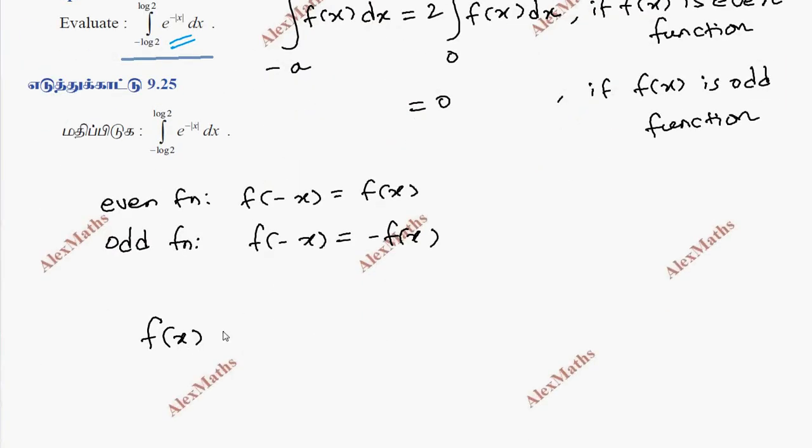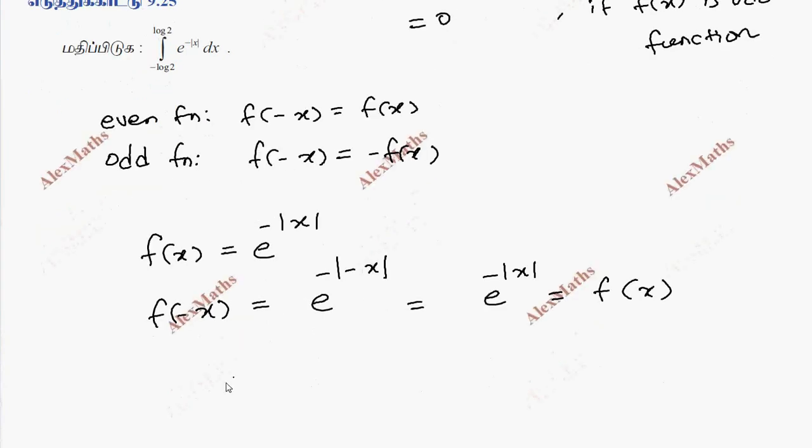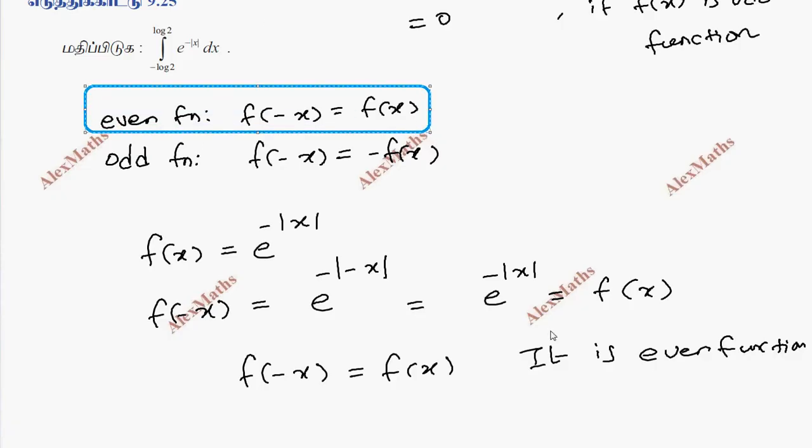f of minus x is equal to e power minus mod of minus x. But inside the mod we can ignore the minus sign, so f(minus x) equals e power minus mod x, which equals f(x). Therefore, the function is even.